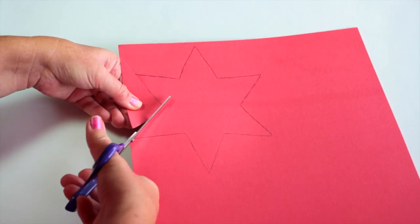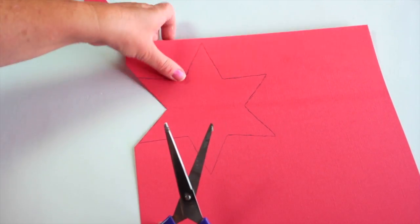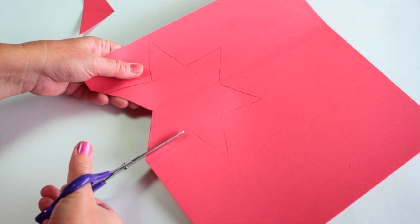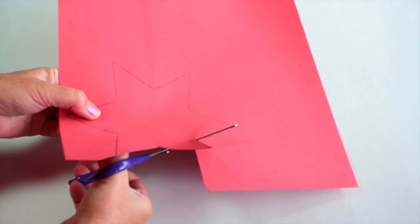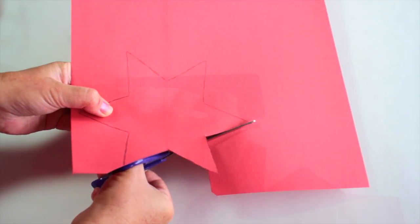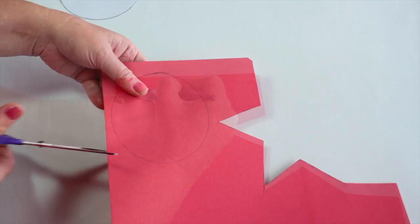Now cut out the star. Draw a large circle onto the dark pink cardboard and cut it out.